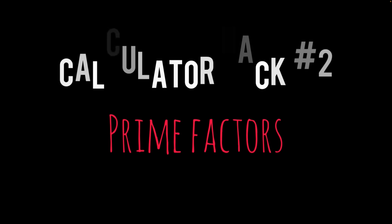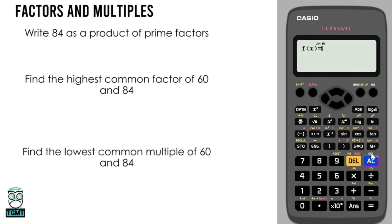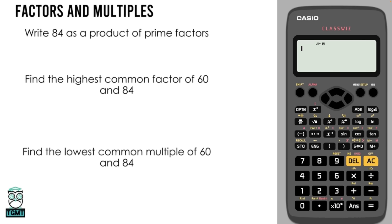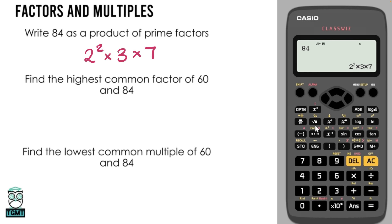Calculator hack number 2: we're going to be looking at prime factors. We need to come out of table mode and go back to normal mode. Enter the number 84 into the calculator, press equals — that number needs to be stored in the calculator for this to work. Then click the FACT button: press shift to get that, click FACT, and there we go — it gives us the number as a product of prime factors.